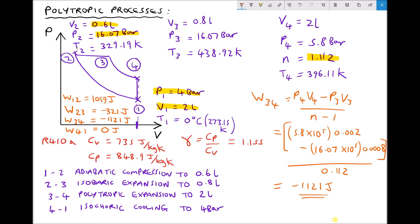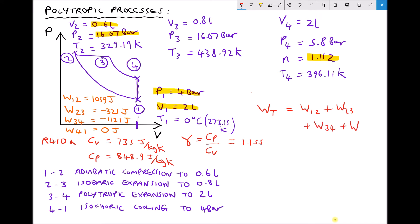Now for completeness, what we can do is we can work out the network done on or by the gas. So let's clear a little space in the bottom right hand corner. And if we want to work out the network done on or by the gas, we need to work out the work done or the total work per cycle. So that would be the work done in moving from position 1 to 2 plus the work done moving from 2 to 3 plus the work done moving from 3 to 4 plus the work done moving from 4 back to 1.